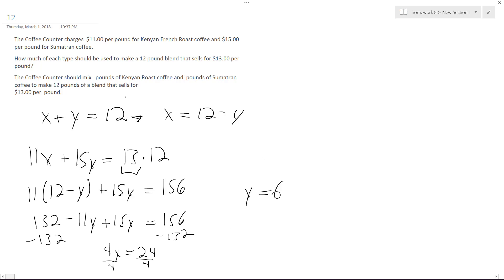So 6 pounds of the $15 stuff. That works out pretty nice, that makes sense. So, 6 pounds Kenyan... X equals 11... oops, sorry, that should be Sumatran. This is Kenyan. I think it's 6 split down the middle, so that kind of makes sense.